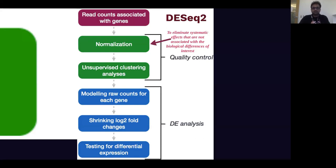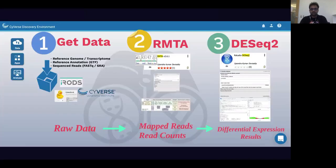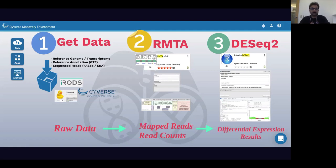How does the pipeline look in Cyverse's discovery environment? It's as simple as three steps. The first involves getting your data into the Cyverse data store. Second is performing read mapping and transcript assembly using the RMTA app. And finally, using the RStudio DESeq2 VICE app, we'll be able to identify differentially expressed genes. So in this pipeline, we are going from raw data all the way to differential expression results.